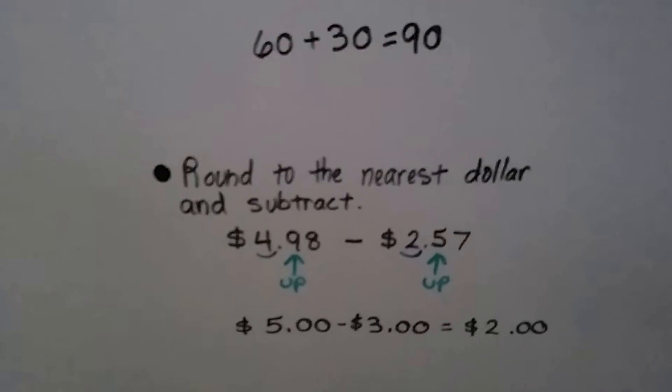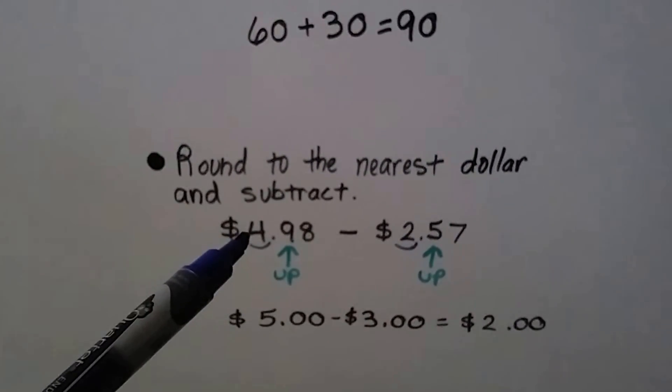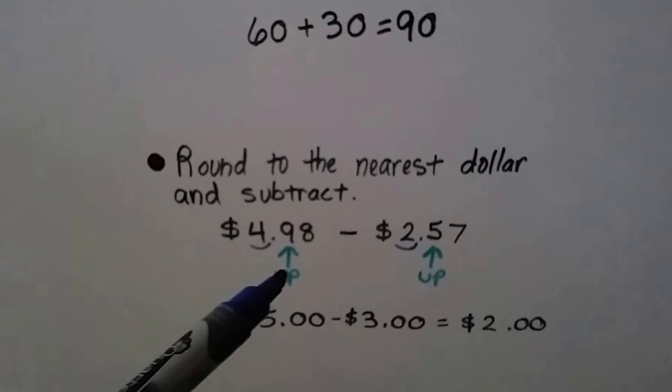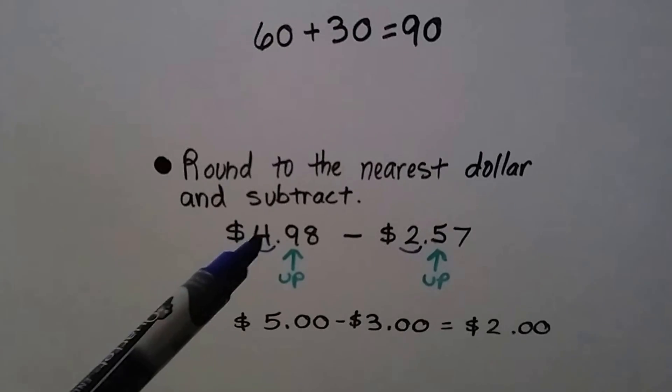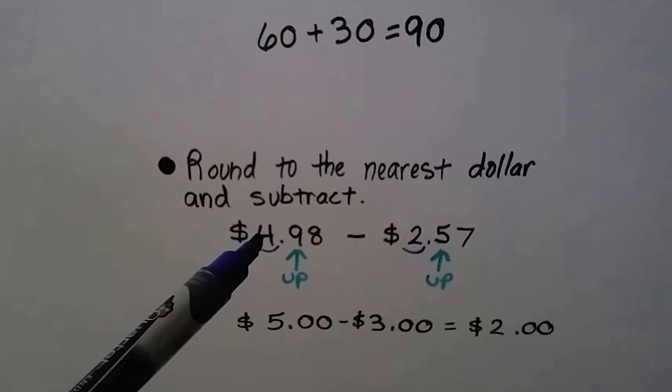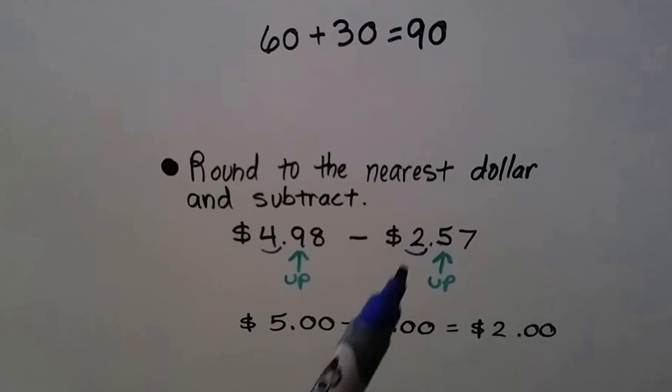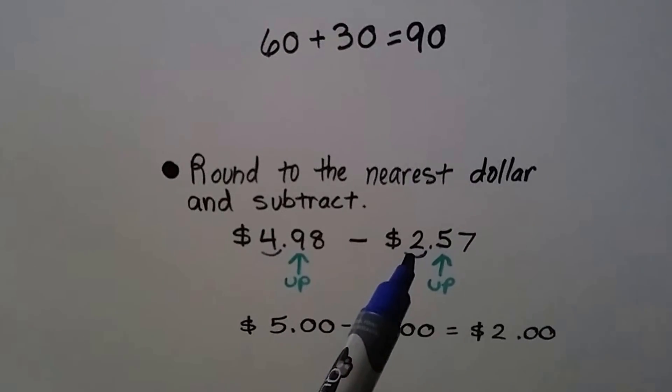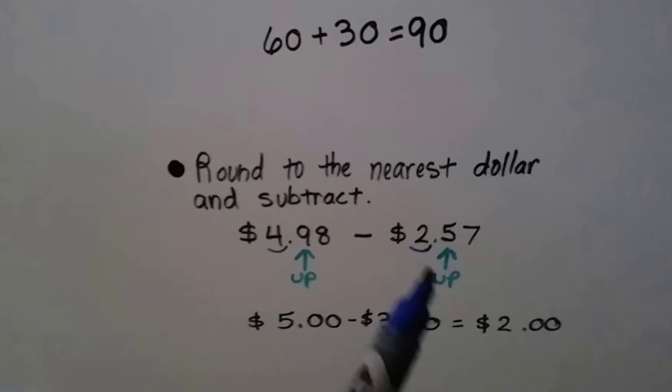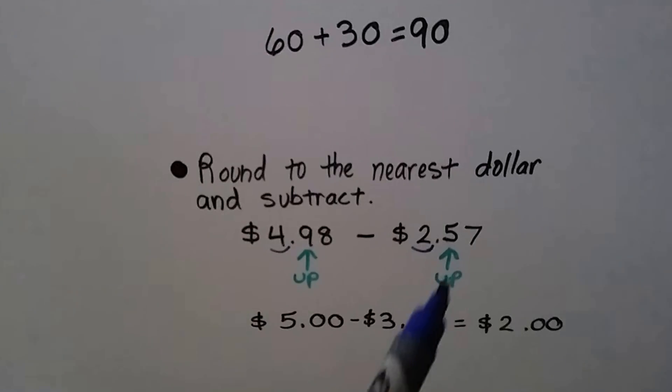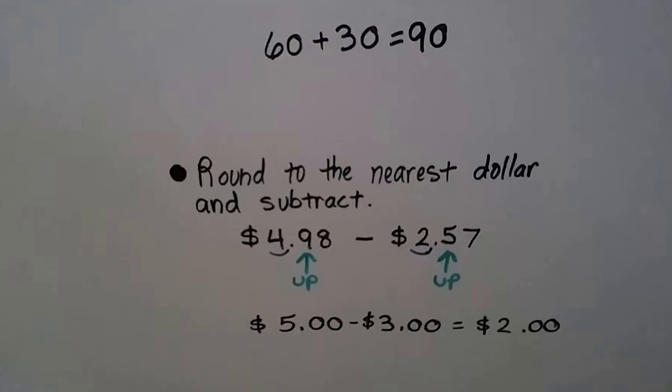We could even use money to do it. If you want to round to the nearest dollar. If we've got $4.98 and we need to round to the nearest dollar, here's the dollar place. This 9 is going to tell that 4 to go up. It's going to turn into zeros. It's going to round to $5. If we need to take away $2.57, we can round it to the nearest dollar. That 5 tells the 2 to go up. And then it turns into zeros. So now we've got $5 take away $3. That's $2.